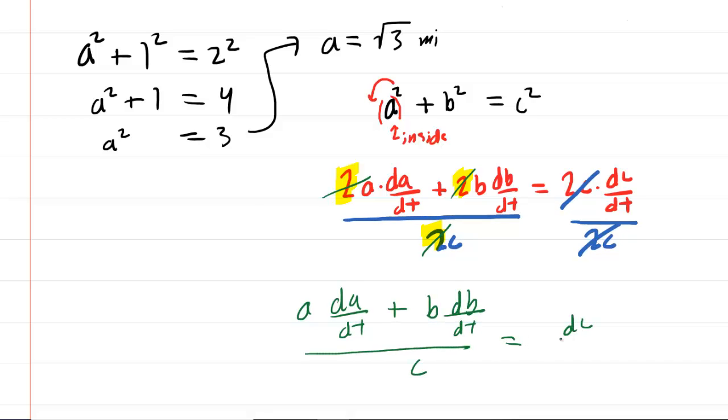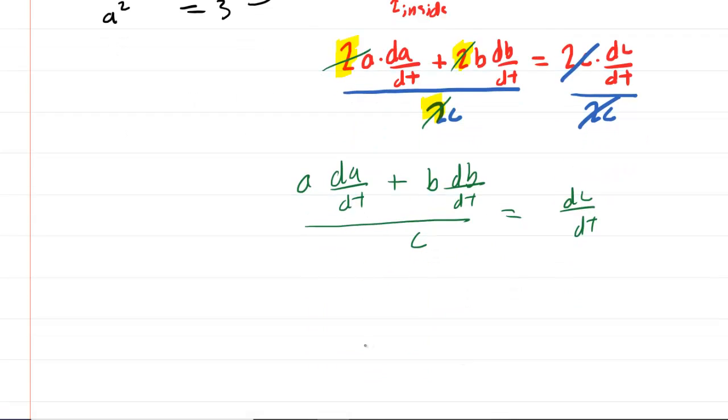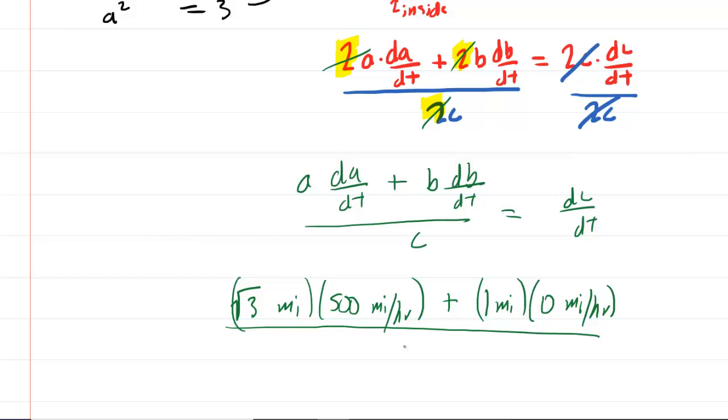So now you are simply left with A da/dt plus B db/dt divided by C. And this will equal the rate at which the side marked C is changing. We can now plug in all the known values. So A was the square root of 3 miles, da/dt was 500 miles per hour, B was 1 mile, db/dt was 0 miles per hour. Remember that its rate was not changing. And then we divide by C, which was 2 miles.